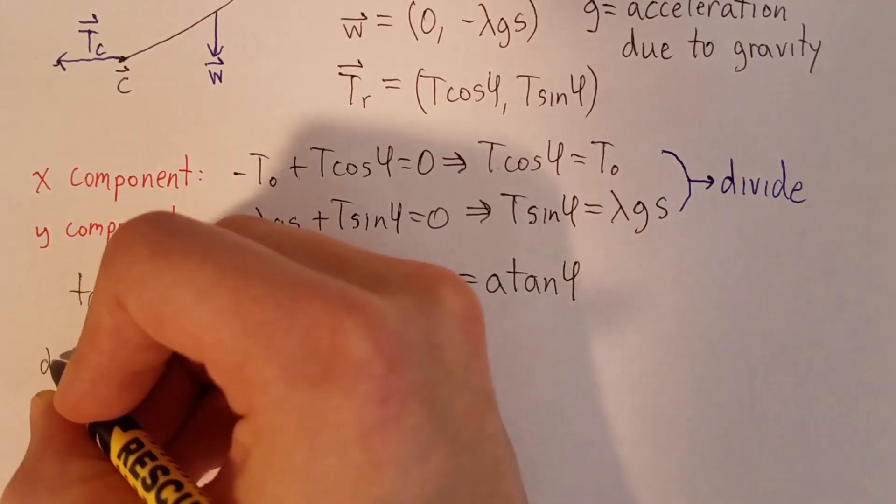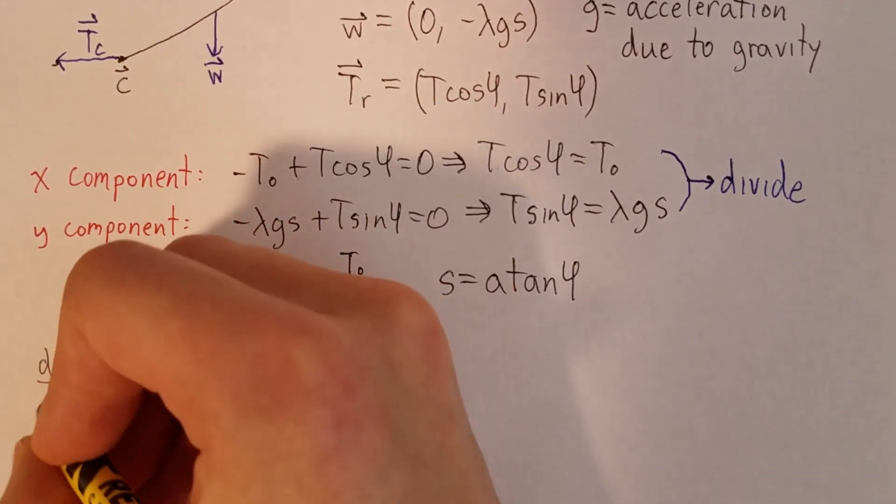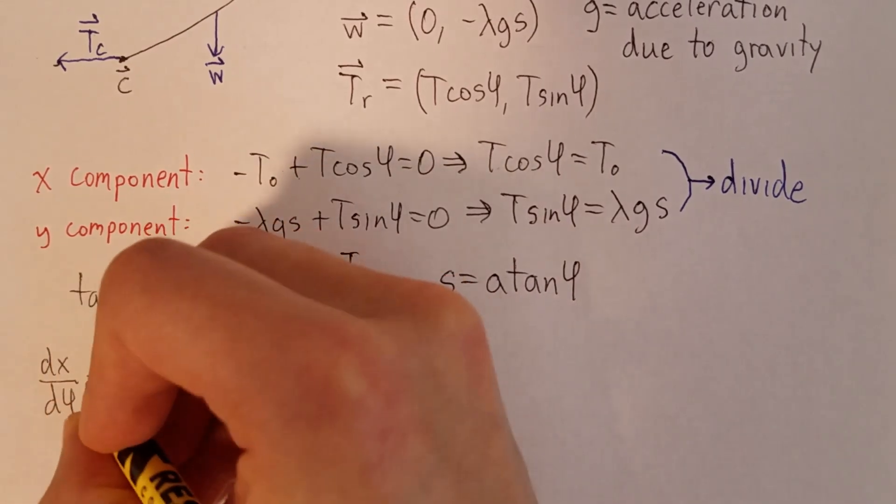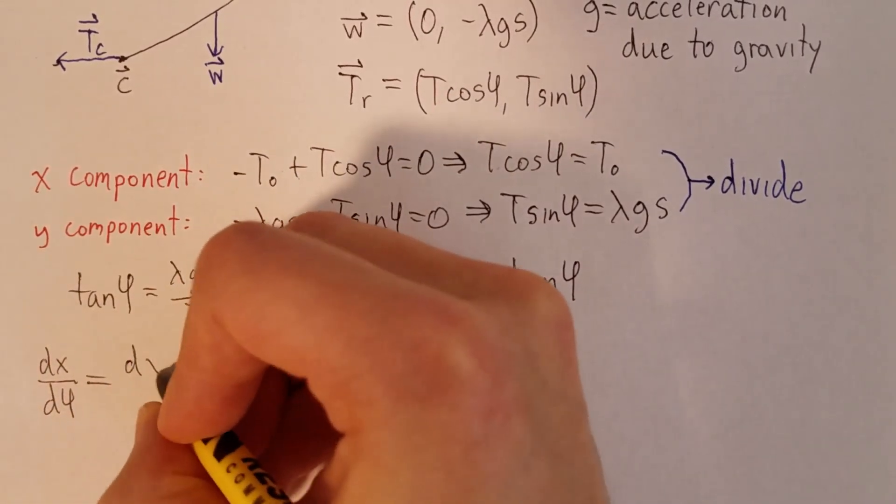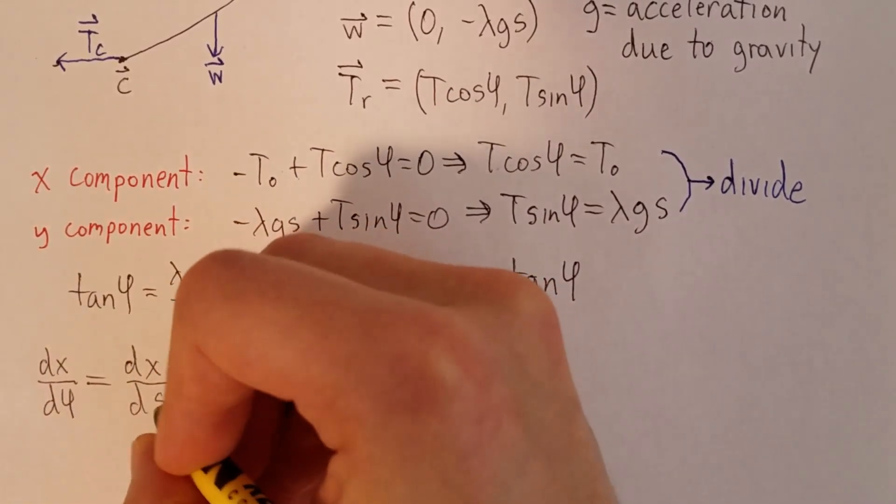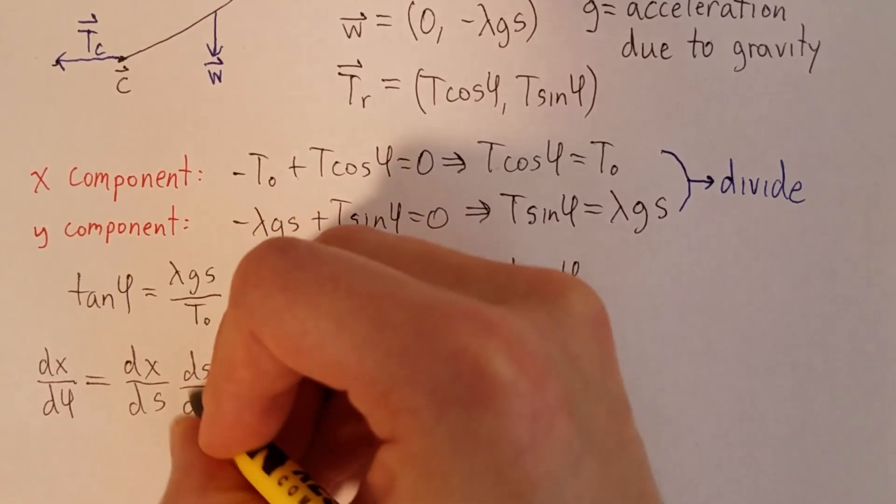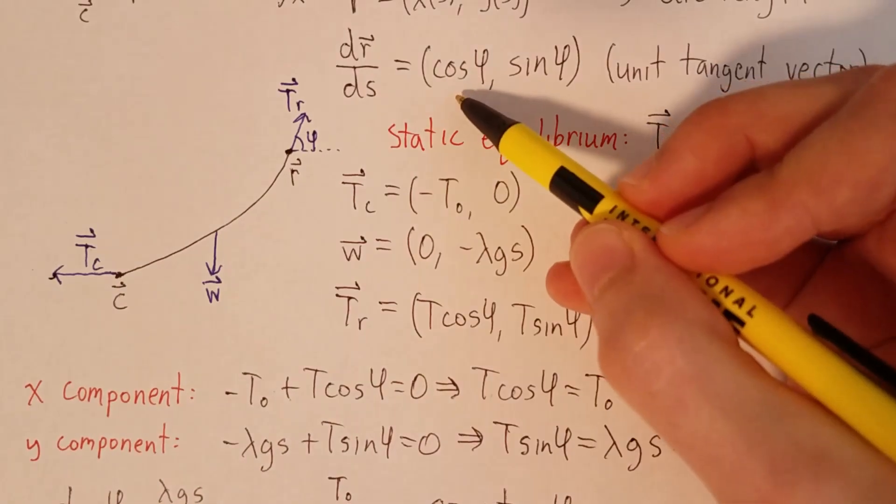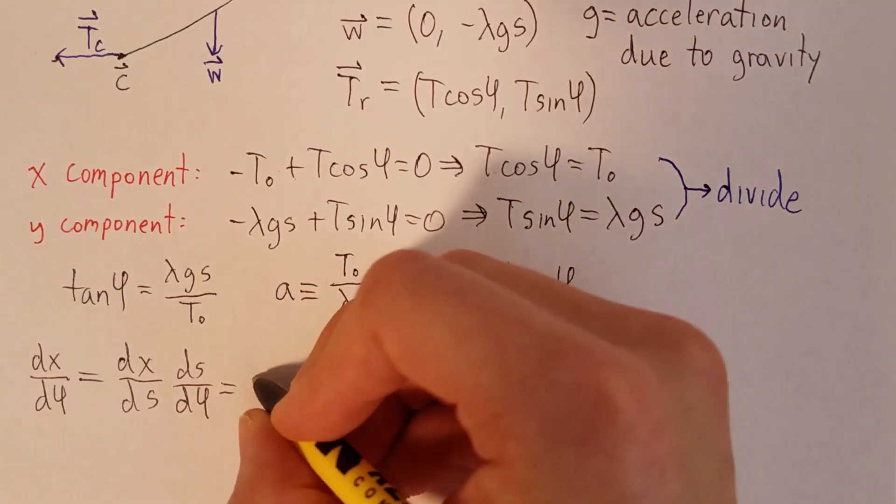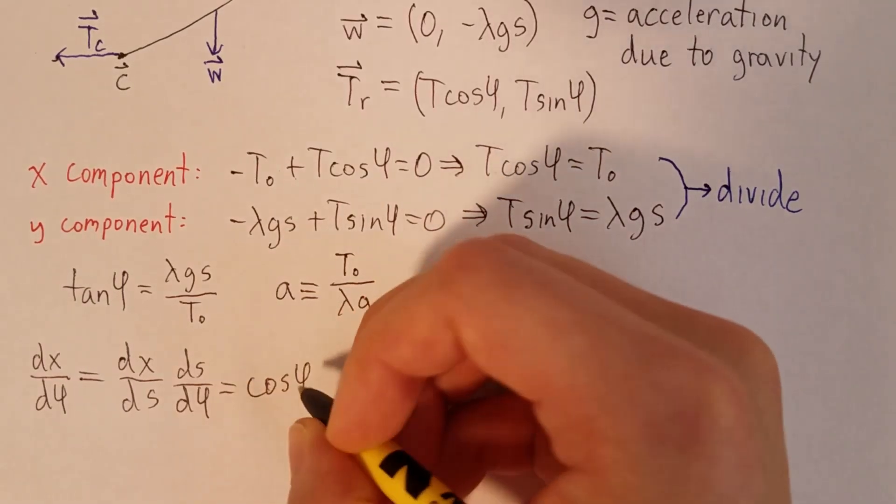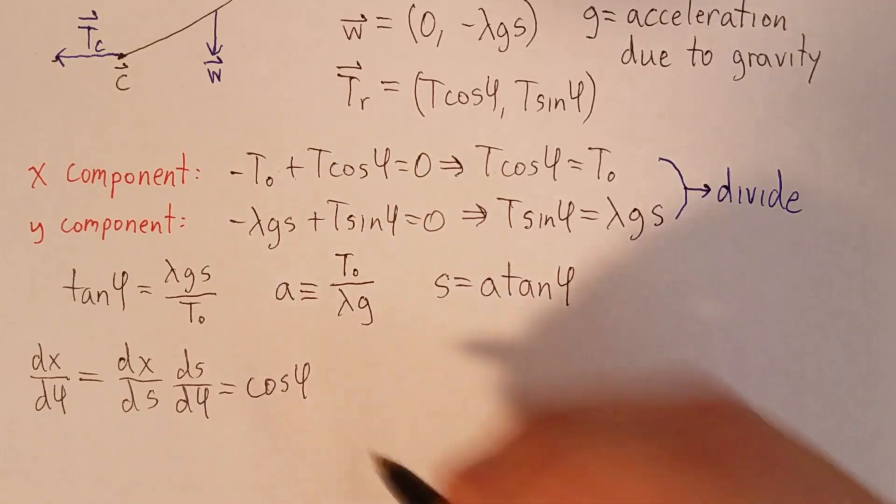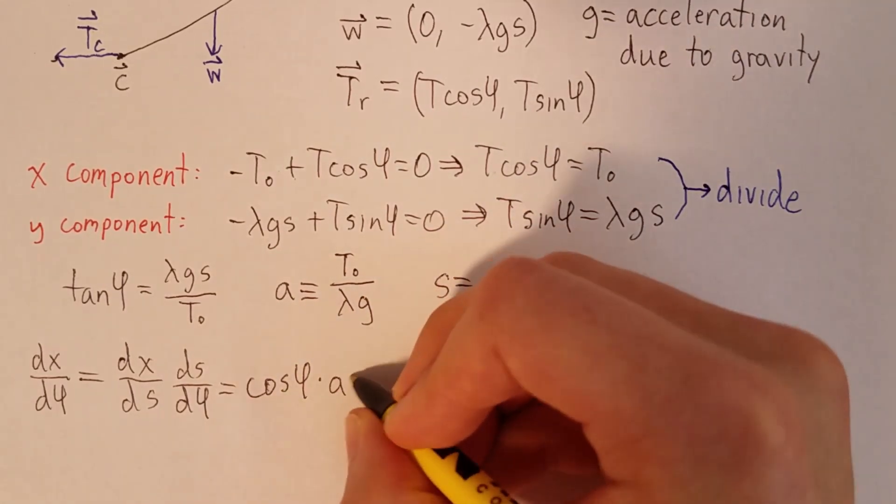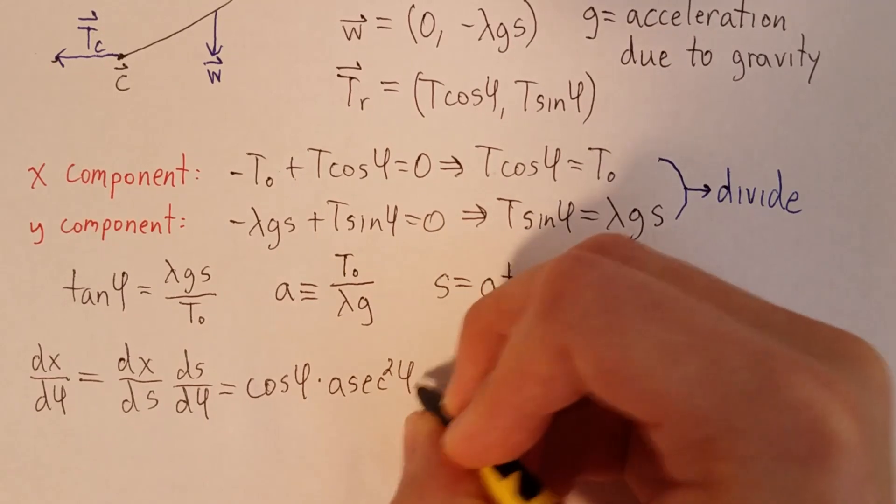Now let's examine dx/dφ and dy/dφ. Using the chain rule, we can write dx/dφ as dx/ds times ds/dφ. And from the way we parametrized the string, we know that dx/ds is cosine of φ. And now we can calculate that ds/dφ is a secant squared of φ. So we find that dx/dφ is a secant φ.